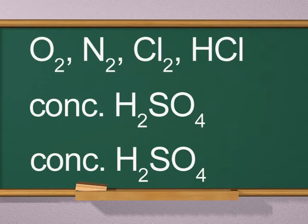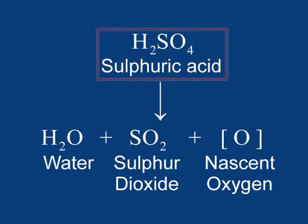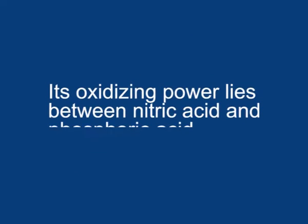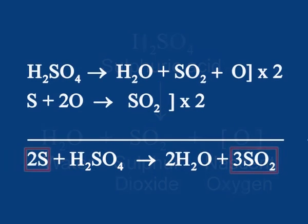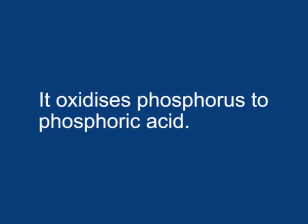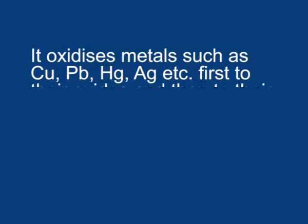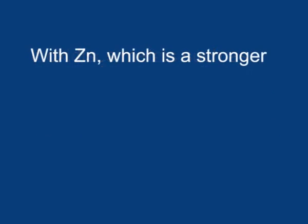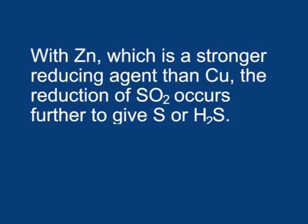Hot concentrated sulfuric acid is a moderately strong oxidizing agent, since on decomposition it gives nascent oxygen. Its oxidizing power lies between nitric acid and phosphoric acid. This nascent oxygen brings about oxidation of a number of non-metals and metals. It oxidizes sulfur to sulfur dioxide, and phosphorus to phosphoric acid. It oxidizes metals such as copper, lead, mercury, and silver — first to their oxides and then to their corresponding sulfates — liberating sulfur dioxide gas. With zinc, which is a stronger reducing agent than copper, the reduction of sulfur dioxide occurs further to give sulfur or hydrogen sulfide.